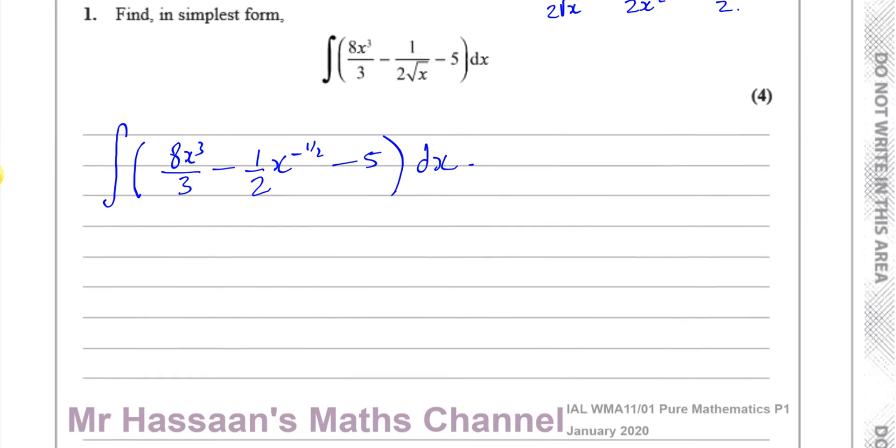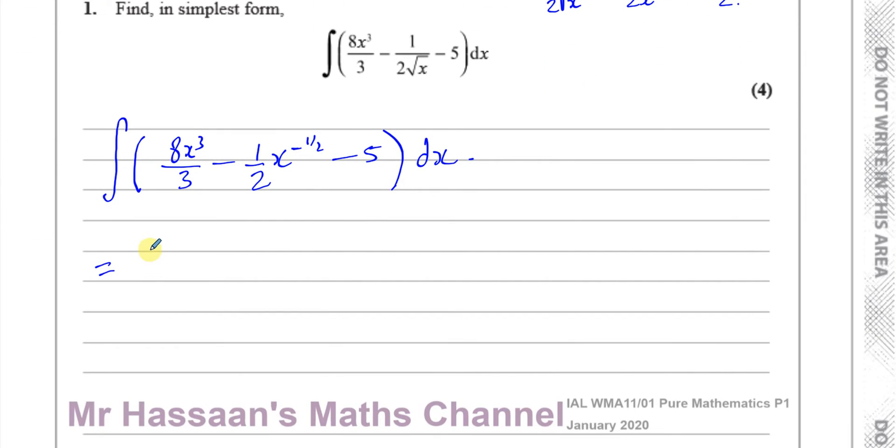So now what we're going to do is when we integrate, we can put this square bracket, which we're going to now write the integral of these things in here. So we're going to integrate. Now integration in P1 maths is pretty simple. You just have to know that you add 1 to the power and divide by the new power. So this is going to be 8x to the power of 4 divided by 4. So you've already got 3 there, so it's going to be divided by 3 times 4.